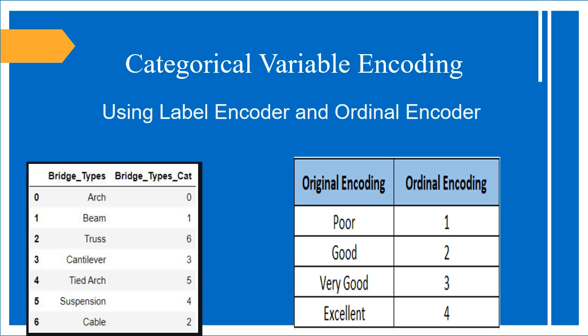This is the major difference between these two encoders. Label encoder encodes values in alphabetical order — for example arc is zero, beam is one, then c comes third. But ordinal encoder does not encode in alphabetical order. Instead, we manually assign values: poor as one, good as two, very good as three, excellent as four.